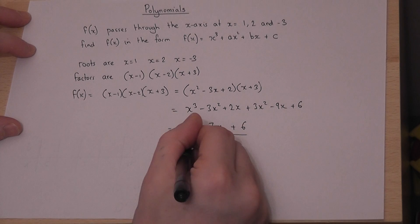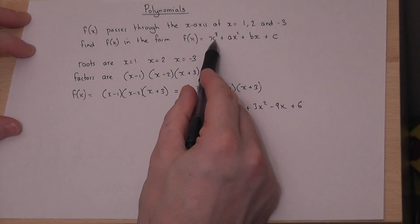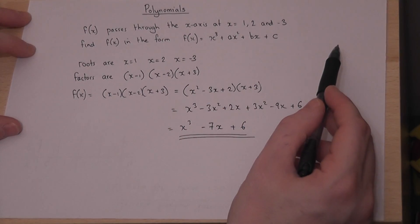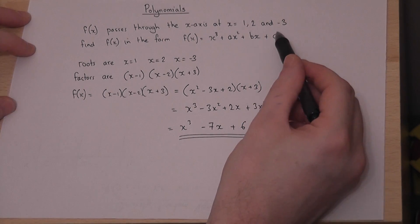So there we go. Written the function in the form ax³ + ax² + bx + c, where a is 0, b is -7, and c is 6.